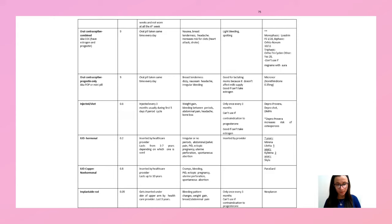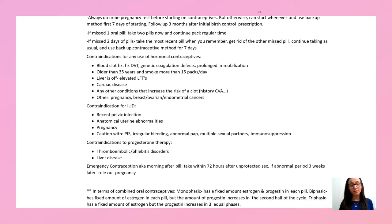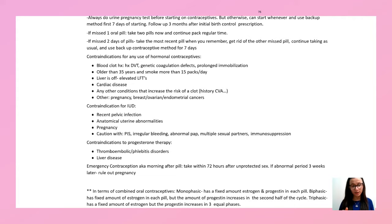For contraceptives in general, you always want to do a urine pregnancy test before starting them on birth control. Whenever you start, you want them to use a backup method for the first seven days, and always follow up in three months after you first prescribe them. If they miss one oral pill, you want them to take two pills and then continue the regular pack.